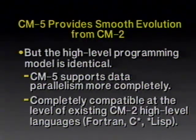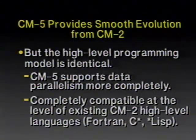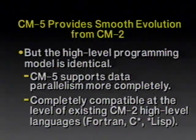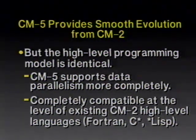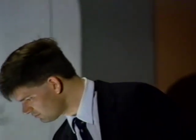The hardware is much more complex on the CM5 than the CM2 — it's more general in a number of ways, and it's more balanced. But the high-level programming model is identical. The CM5 supports data parallelism more completely because it has a MIMD architecture rather than a SIMD architecture. But the CM5 is completely compatible to the level of existing CM2 high-level languages. Several hundred FORTRAN programs from the CM2 have been simply recompiled and dropped on the CM5 — and they work, and they work efficiently. We can also look forward to improved performance on old CM2 codes as the compilers get better.